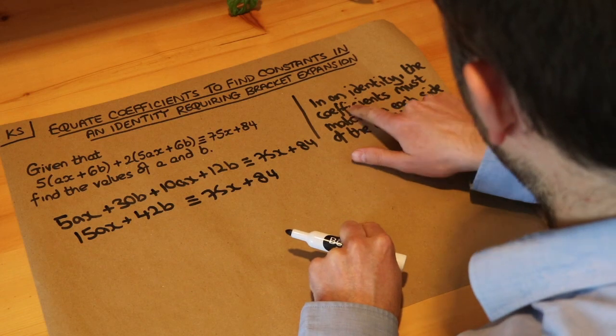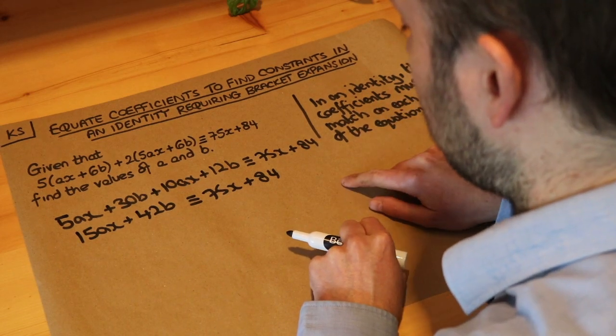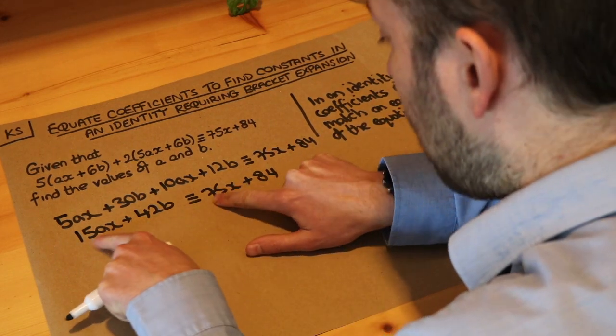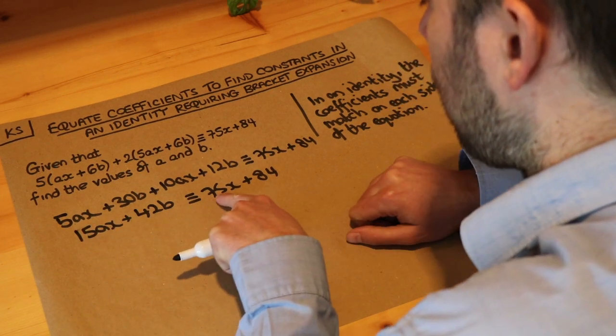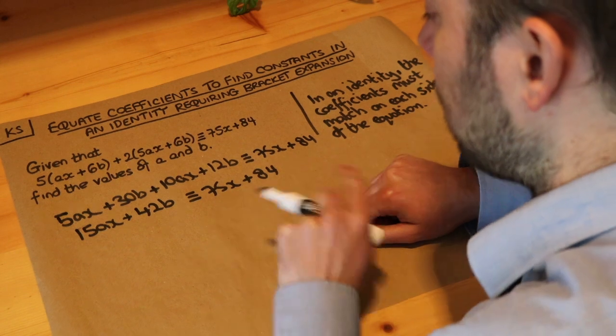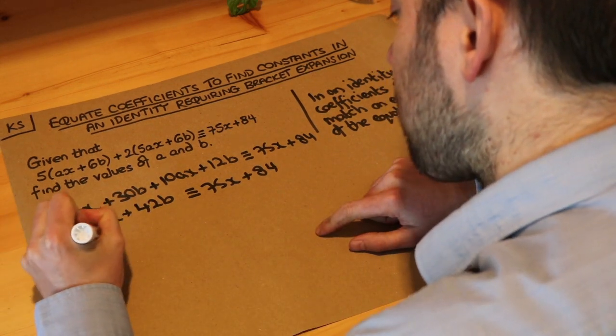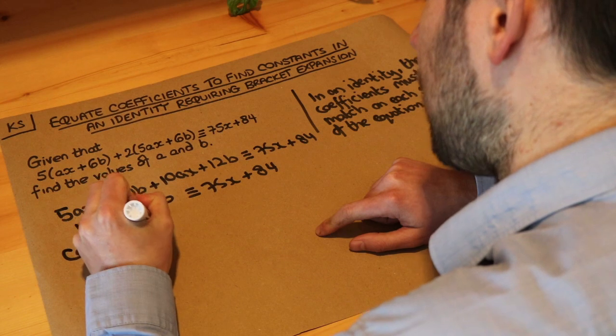Now as per this instruction here, we must equate the coefficients. The coefficients of the x terms are the numbers in front, so the coefficient of this term is the 15a, the coefficient of this x term is the 75. So let's compare the x terms first.